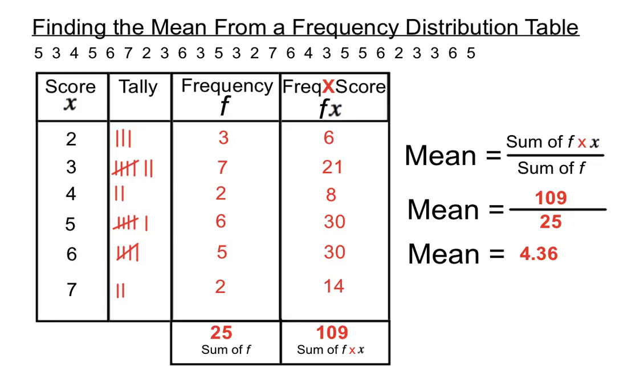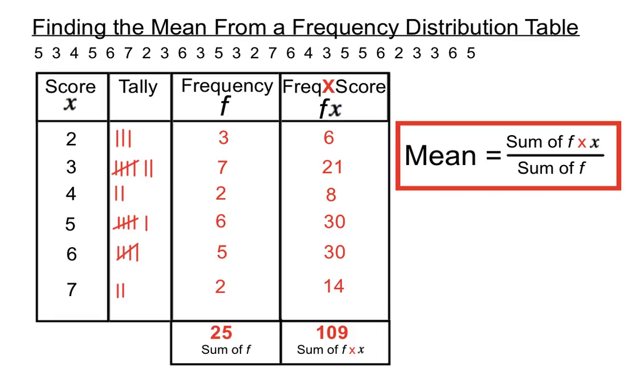And there we have it. So we create an extra column, add an extra column to a normal frequency distribution table. And we get the totals of those two columns, the f and the fx column. And we put in that arrangement, big number divided by small number in this case. So that's how we do it. Sum of the fx column over the sum of the f column.